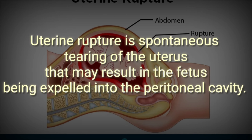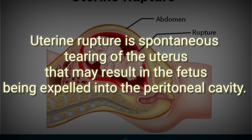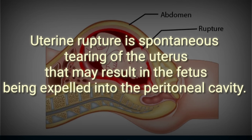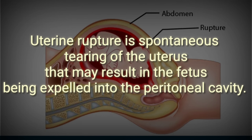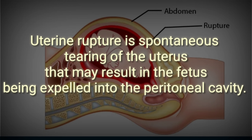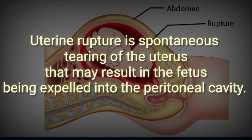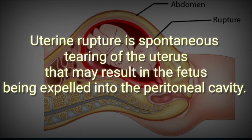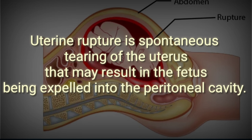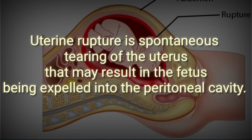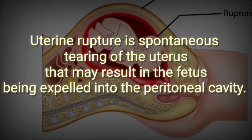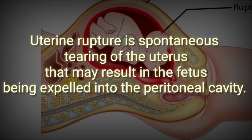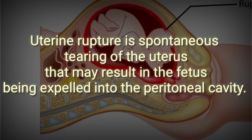Hello everyone, welcome to today's session. Let us start with a question: why do doctors recommend that women who have had a cesarean delivery avoid vaginal delivery in later pregnancy? Because of the chance of uterine rupture. Uterine rupture is the spontaneous tearing of the uterus that may result in the fetus being expelled into the peritoneal cavity.